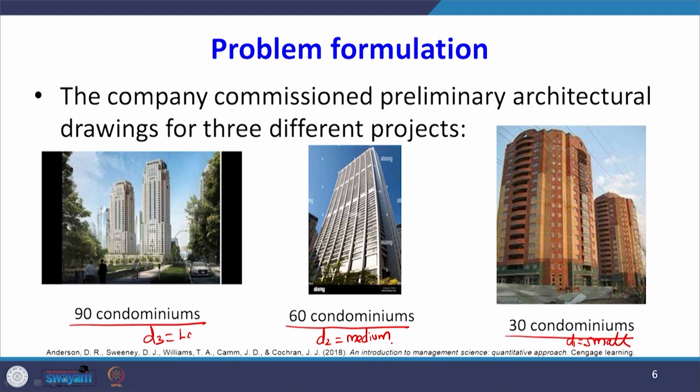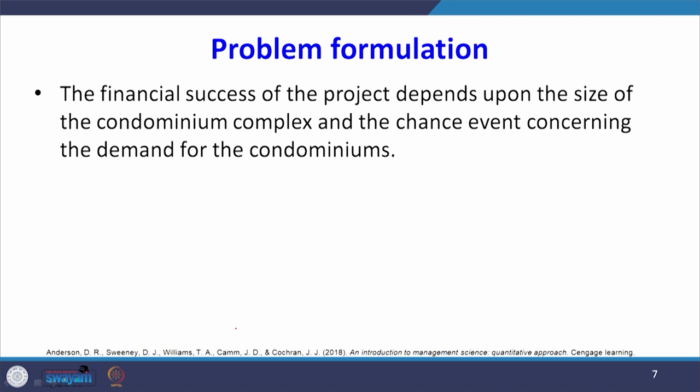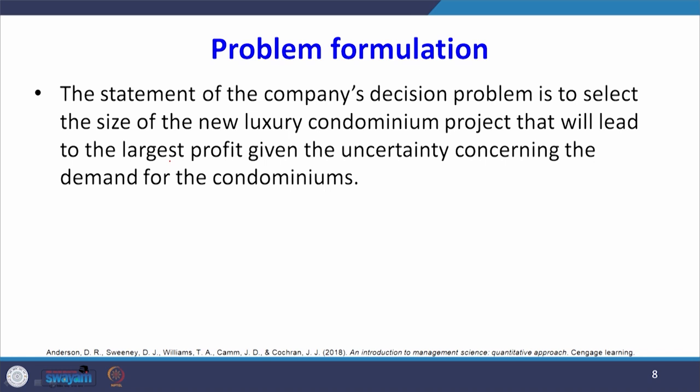These are the three decision alternatives. The financial success of the project depends upon the size of the condominium complex and the chance event concerning the demand for the condominium. The chance event here is demand, and the states of nature is demand. The statement of the company's decision problem is to select the size of the luxury condominium project that will lead to the largest profit given the uncertainty concerning demand.